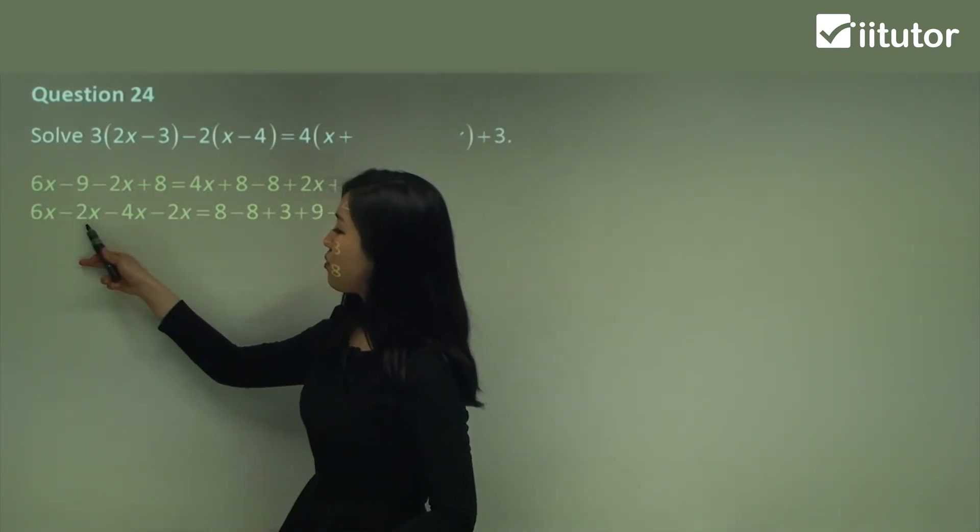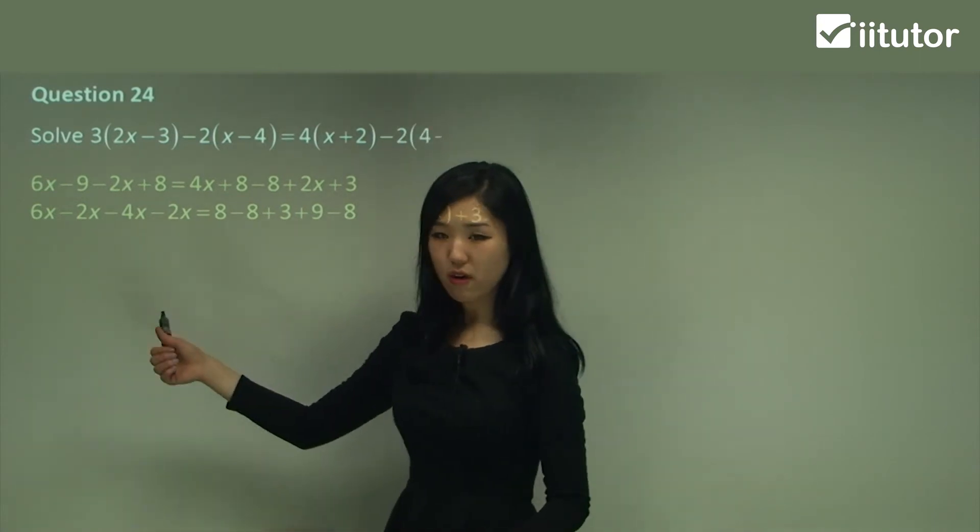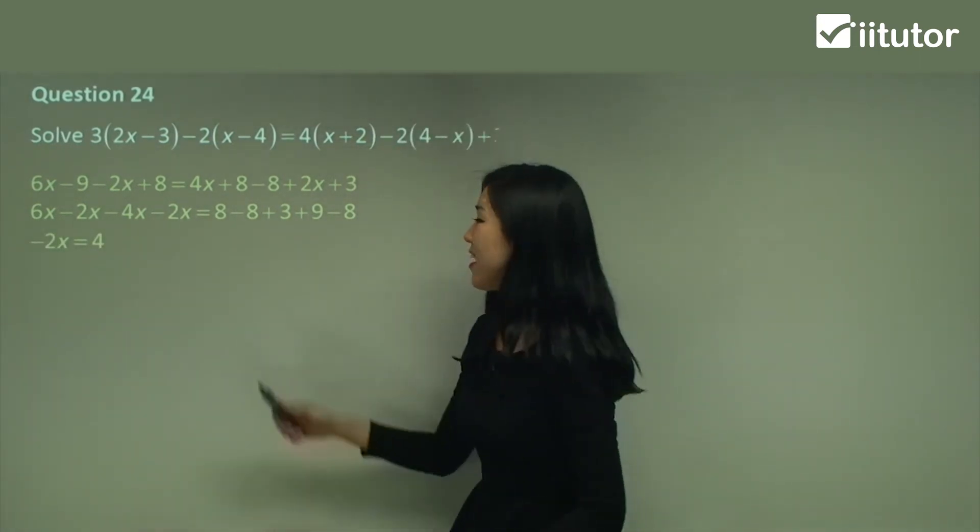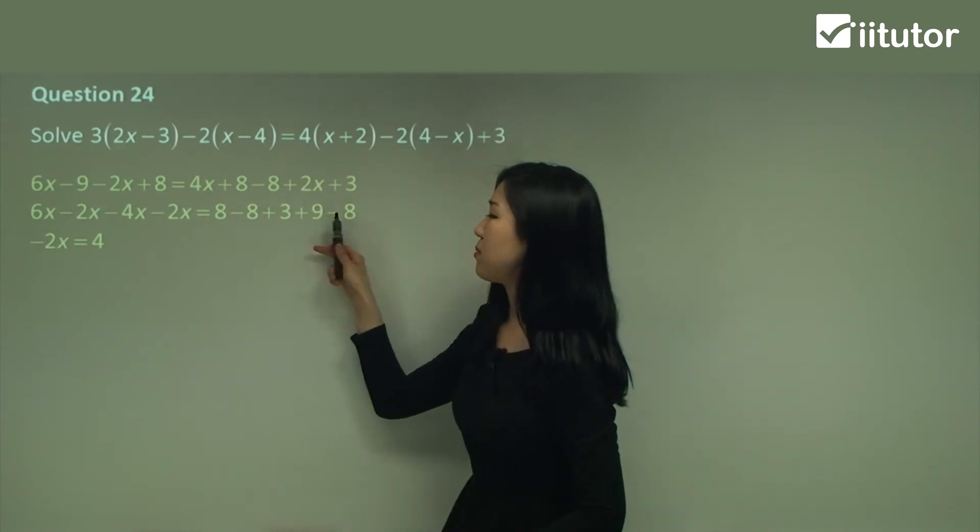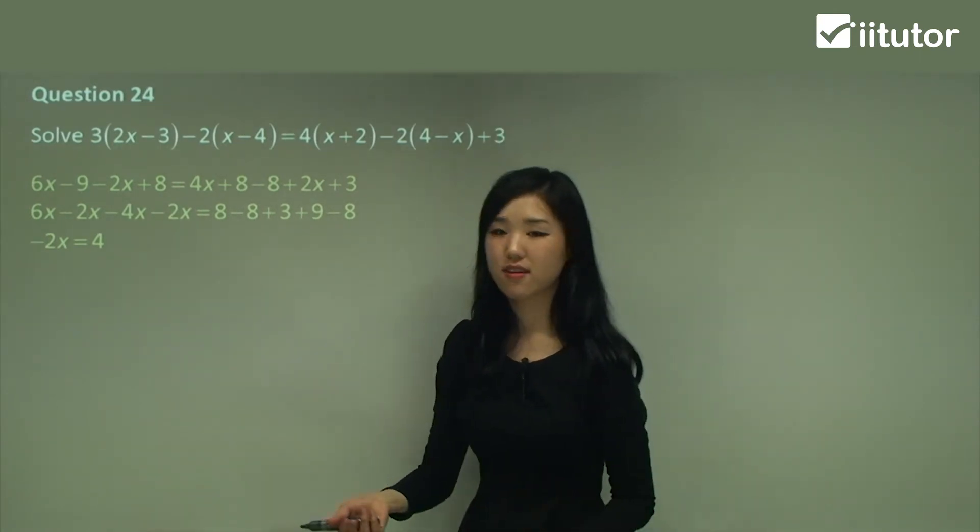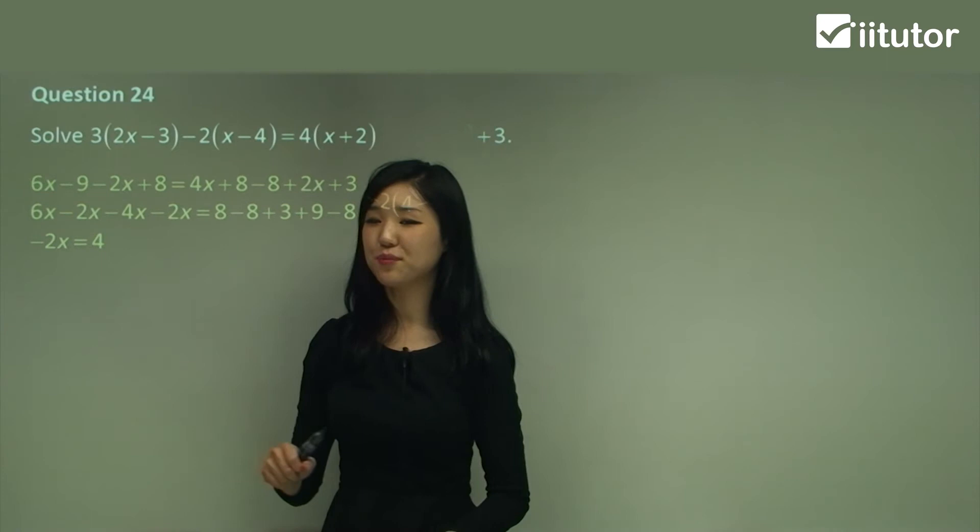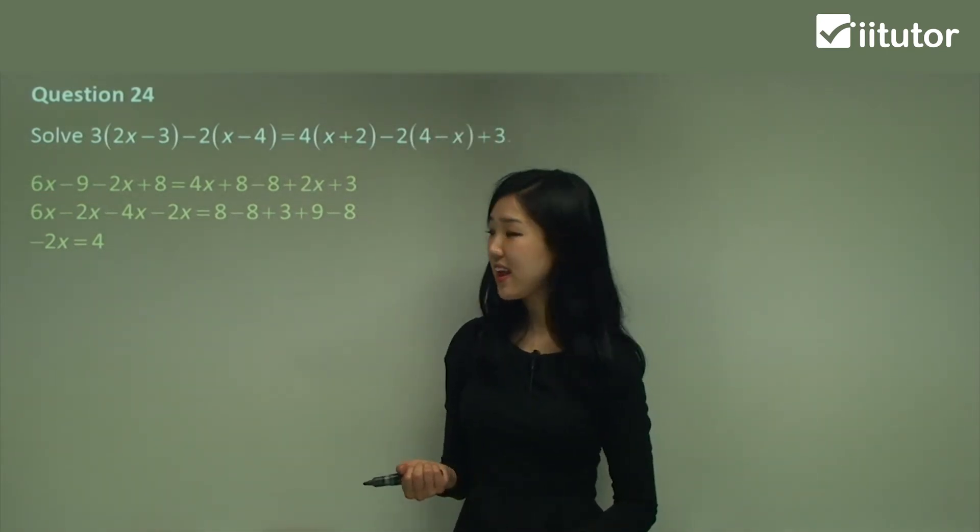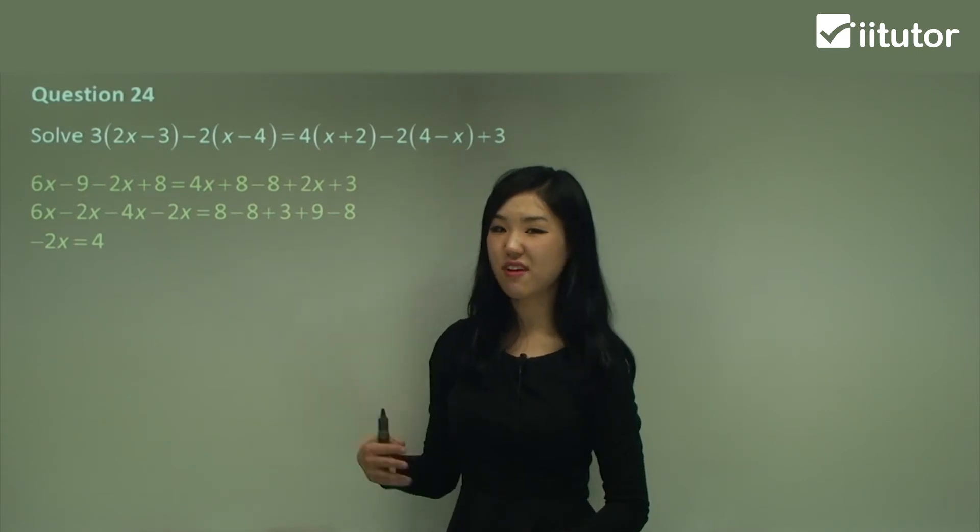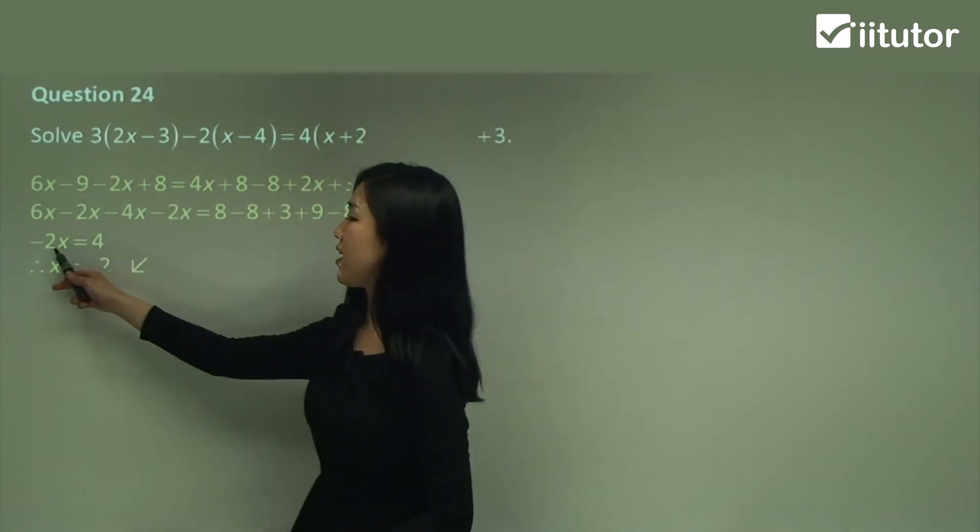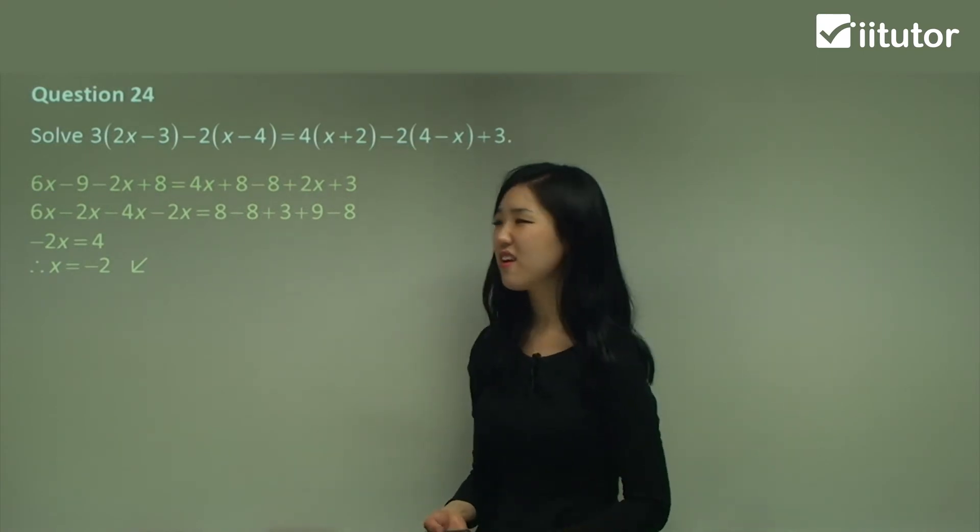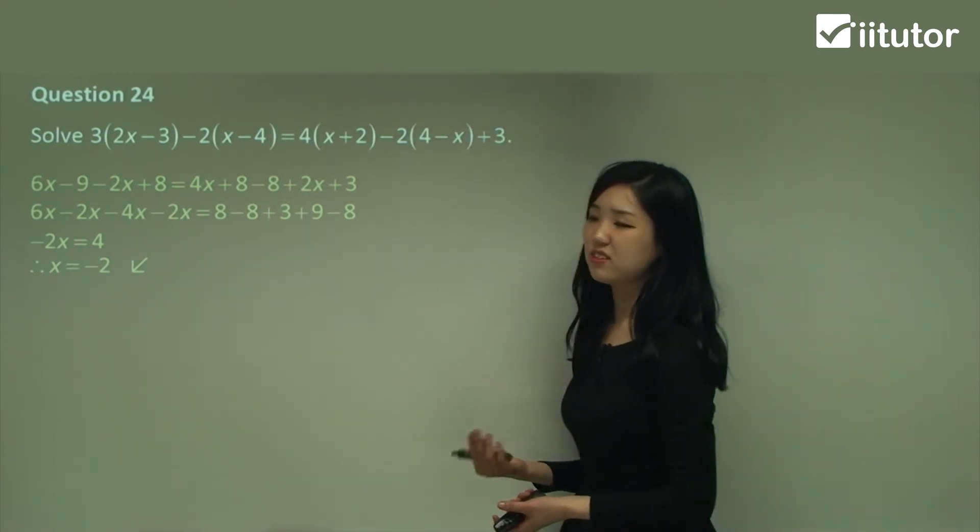So 6 minus 2 is 4. Minus 4 is 0. Minus 2 is minus 2x. Now 8 minus 8 plus 3 plus 9 minus 8. You guys can calculate that. It should be equal to 4. Now I have negative 2x equals to 4. How do we get rid of the negative 2? Divide. So x is simply 4 divided by negative 2 which is negative 2. So although it's pretty long, it's actually really easy.